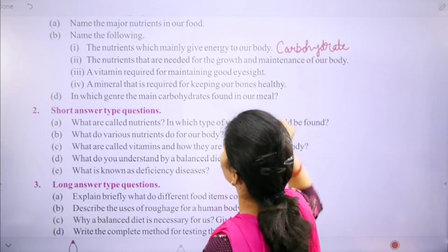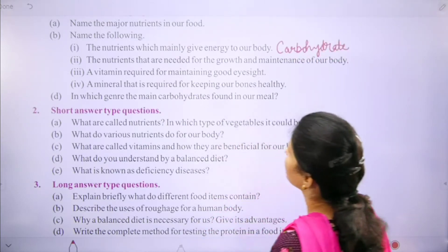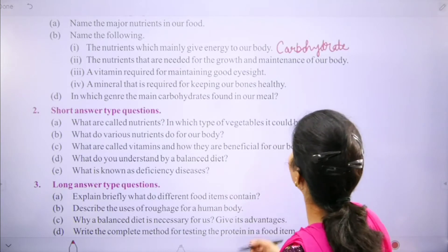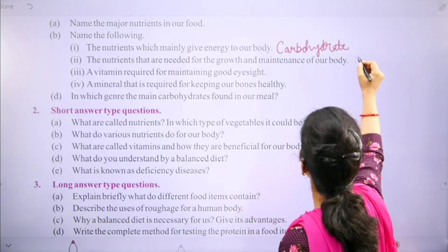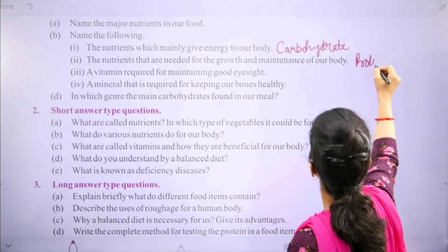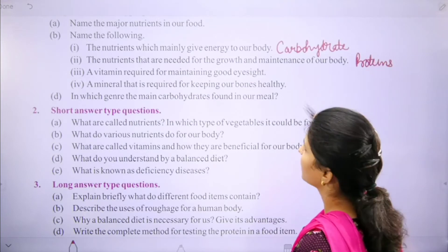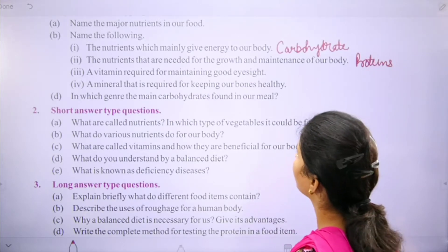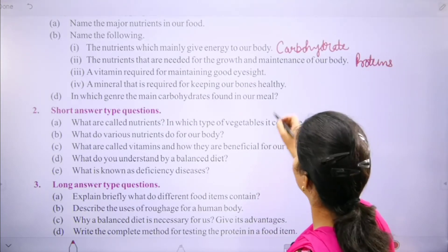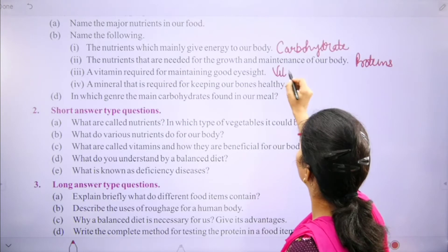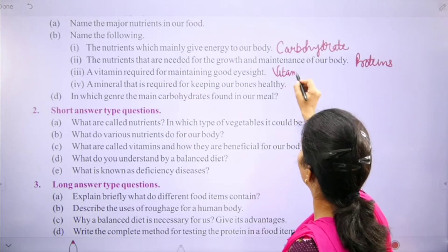Second question: the nutrients that are needed for the growth and maintenance of our body — the answer is proteins. Third: a vitamin required for maintaining good eyesight — the answer is vitamin A.